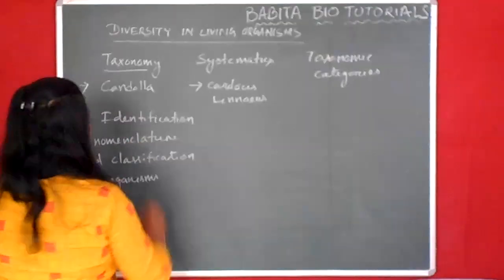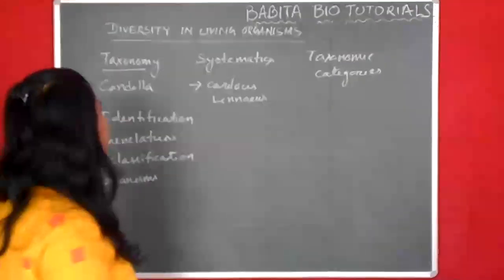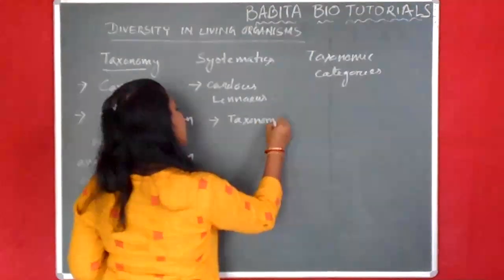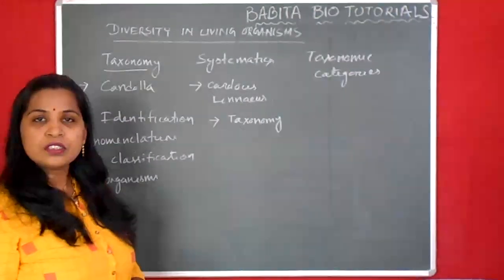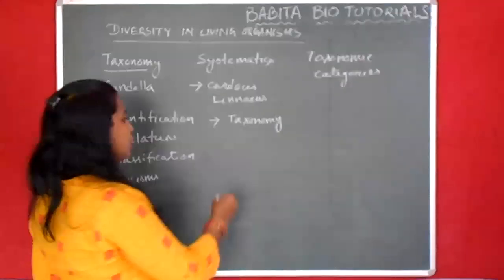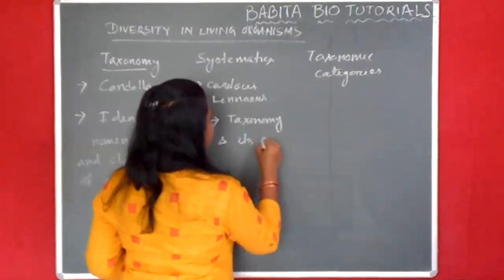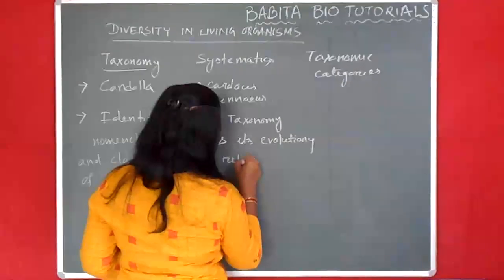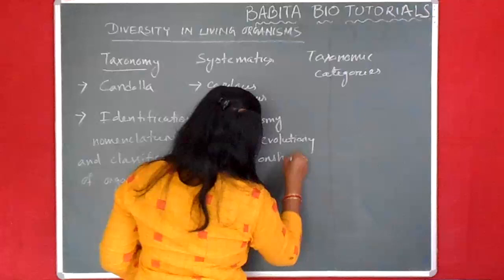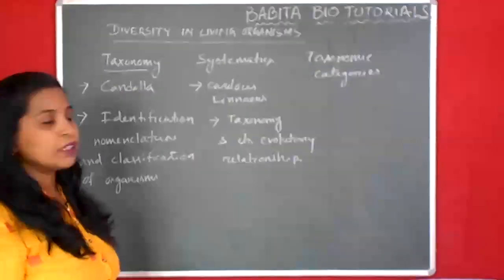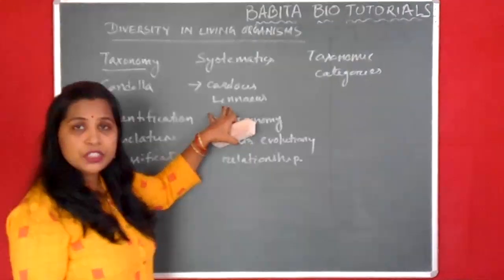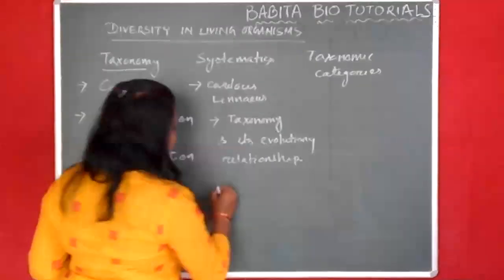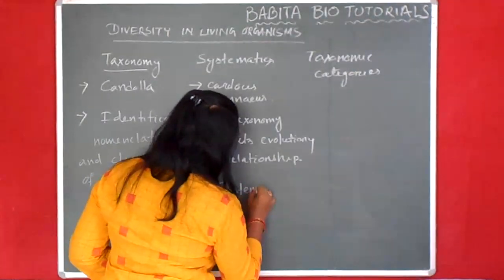Systematics is both Taxonomy and the relationship of the organism to its evolution — Taxonomy and its evolutionary relationships. This is known as Systematics. Carolus Linnaeus was known as the Father of Taxonomy, and he wrote the book Systema Naturae.